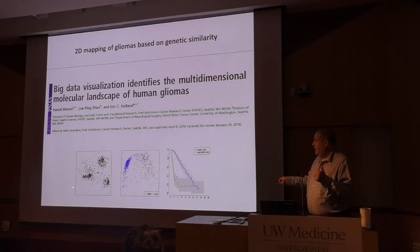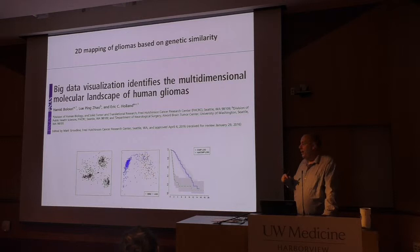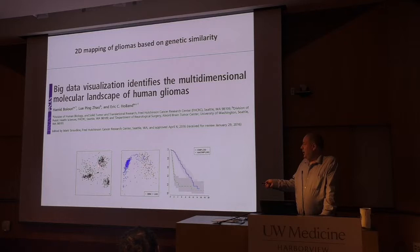Multi-dimensional scaling is a type of dimensionality reduction similar to PCA, except there are no actual axes. The closer the dots are together, the more genetically related they are; the further apart, the less similar. Each data point represents the multi-dimensional molecular profile of one tumor.